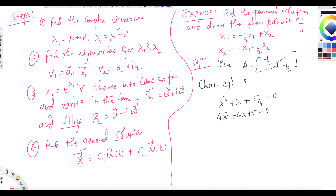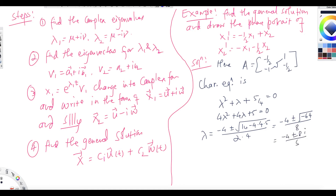Using the quadratic formula: λ = (−4 ± √(16 − 80)) / 8 = (−4 ± √(−64)) / 8 = (−4 ± 8i) / 8 = −½ ± i. So the eigenvalues are λ1 = −½ + i and λ2 = −½ − i, which are complex conjugates of each other.